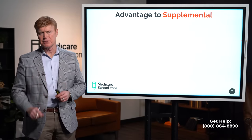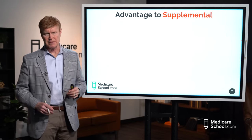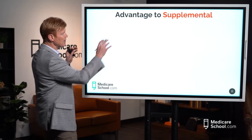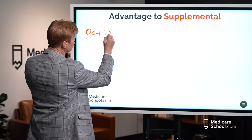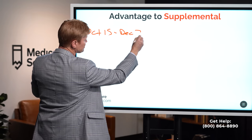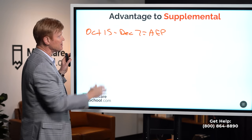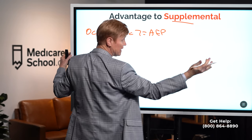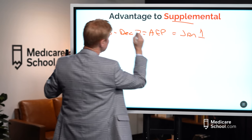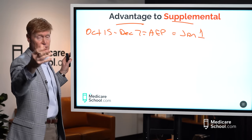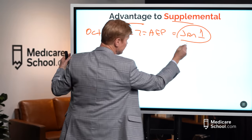The second most common mistake is when people try to switch from an advantage plan to a supplemental plan. The timeframe for this switch is the same: October 15th through December 7th, the annual enrollment period. If someone makes the switch during this time to a supplemental plan, that supplemental plan goes into effect January 1, and the advantage plan remains in effect through December 31st.